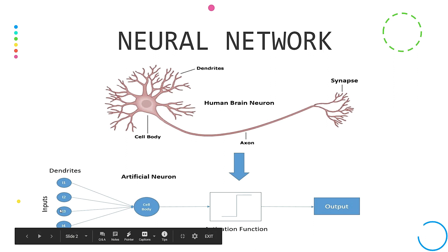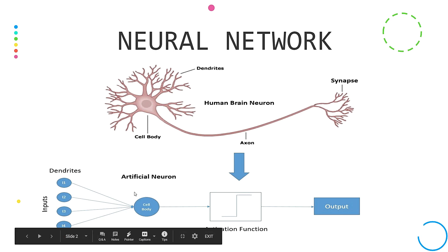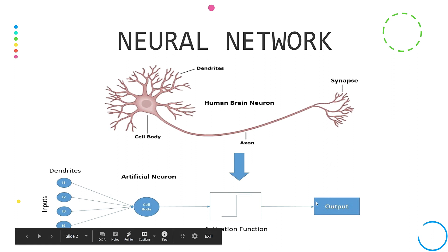What are the Dendrites and Inputs? These are the Features. Next is the Cell Body. So this is the Neuroscience inspiration. This is the cell body, this is the function. Next is the action — this is the Activation Function. This is the Output.